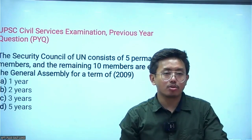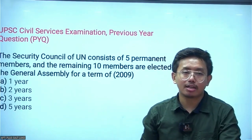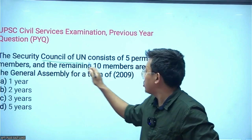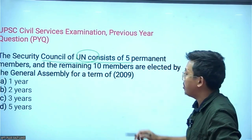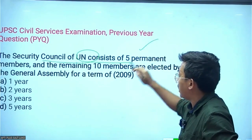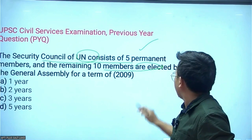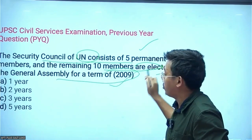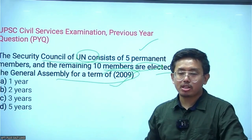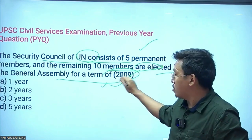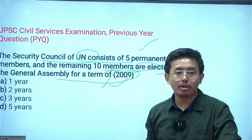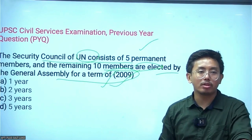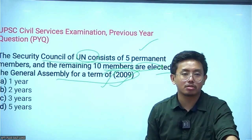UPSC in 2019 asked a question from the topic of the United Nations Security Council: 'The Security Council of the United Nations consists of five permanent members, and the remaining 10 members are elected by the General Assembly for a term of how many years?' Please comment the answer in the comment section.